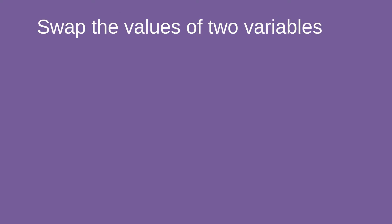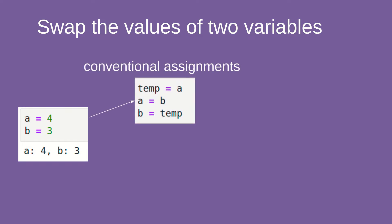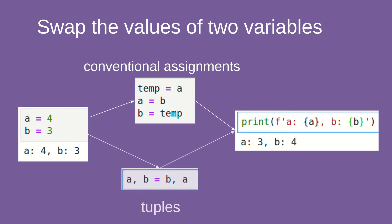How can we use tuple assignment? We can use it to swap two variables in Python. Let's say we have variable a equal to 4 and b equal to 3. If we want to swap their values, we can use conventional programming by adding a third variable and reassigning the values, which ends in a equal to 3 and b equal to 4. Or we can use tuple assignment in one line just to swap their values, which is much more concise and easier to understand.